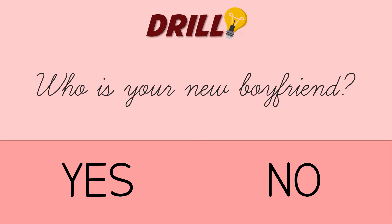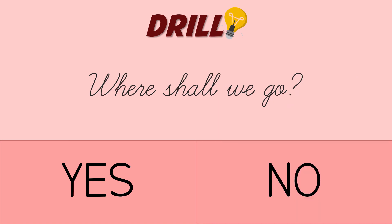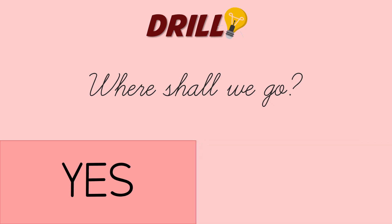Next, who is your new boyfriend? If you answered no, you are wrong because this is still another example of an interrogative sentence. If you can notice, it has a WH word, an auxiliary verb, a subject, and it ends with a question mark. Last item, where shall we go? Do you think this is an interrogative sentence? If you said yes, you are correct.